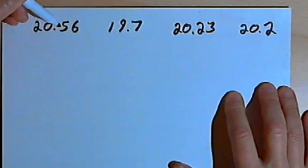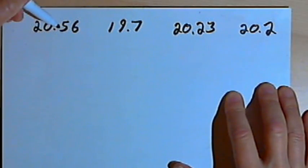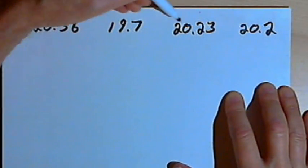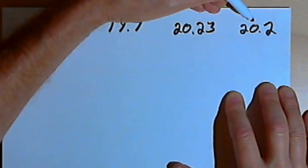I've got four numbers and I want to arrange them in a list from smallest to largest. The numbers are 20.56, 19.7, 20.23, and 20.2.